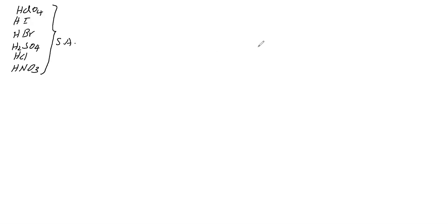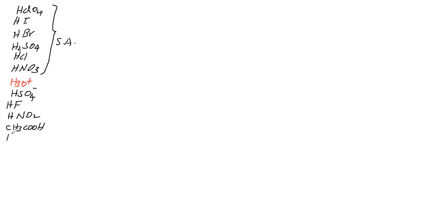Then we are writing H3O⁺. Next we will go for weak acids: HSO4⁻, then HF (hydrofluoric acid), HNO2 (nitrous acid), acetic acid, carbonic acid, hydrogen sulfide, hydrogen cyanide, ammonium ion, then water. These are weak acids.